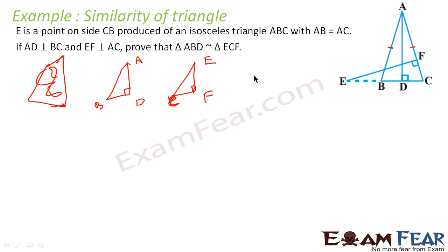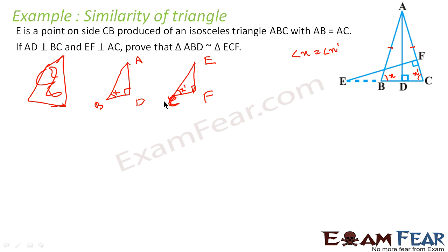Now we have to prove either angle A is equal to angle E, or angle B is equal to angle C. If we prove any one of these, our problem is solved. Since AB is equal to AC, both base angles are equal — let's call them X and X dash, so angle X equals angle X dash. In triangle BAD, angle B is X, and in triangle CEF, angle C equals X dash. Since X equals X dash, angle B equals angle C. D equals F is already proved as 90. So the triangles are similar.